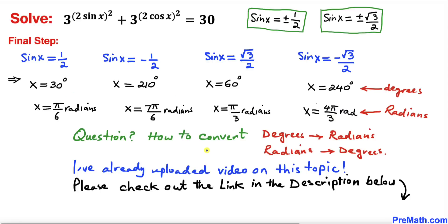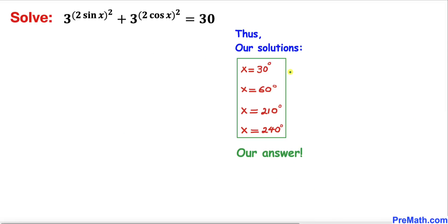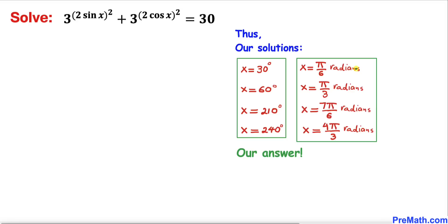If you have questions on how to convert from degrees to radians and vice versa, I have already uploaded a video on this topic — please check it out in the description below. Our four solutions in degrees are 30°, 210°, 60°, and 240°, and in radians π/6, 7π/6, π/3, and 4π/3. Thanks for watching and please don't forget to subscribe!